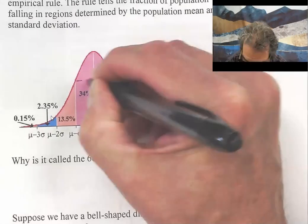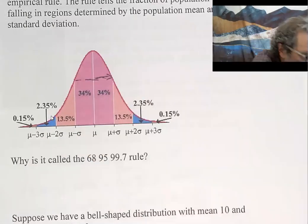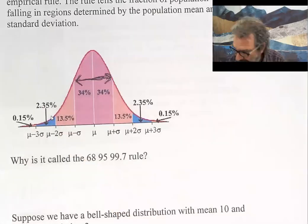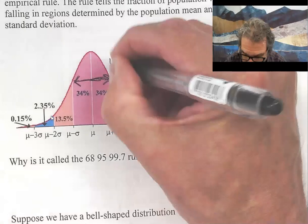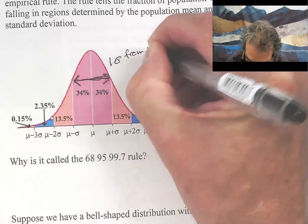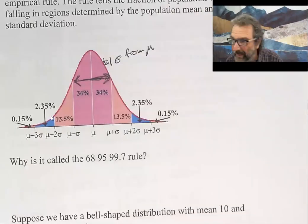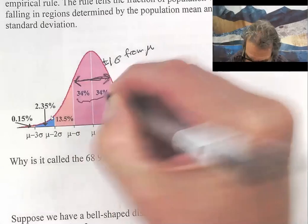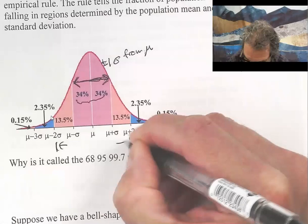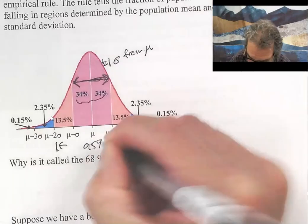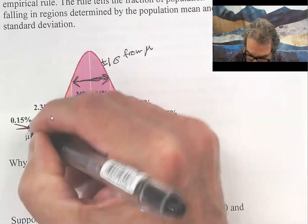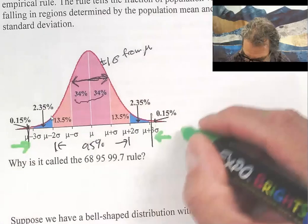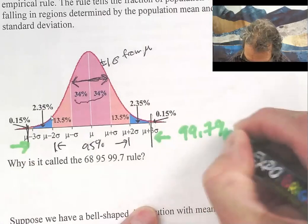That's the picture I stole off the internet. Why is it called the 68-95-99.7 rule? Because plus or minus one standard deviation from μ, that range is 68 percent. If we go two standard deviations, you get 95 percent. And if you go all the way to three, that's 99.7 percent within three standard deviations.